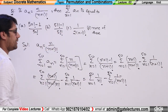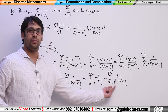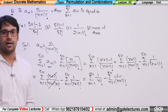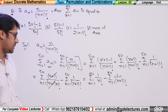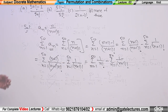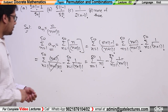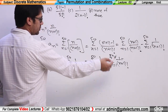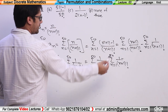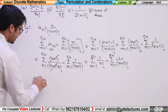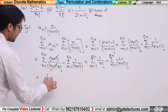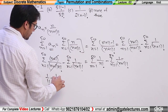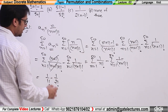Now if we open these brackets, let's see what terms we get. Putting n=1: we get 1/1! − 1/2!. Putting n=2: we get 1/2! − 1/3!. Putting n=3: 1/3! − 1/4!, and so on.